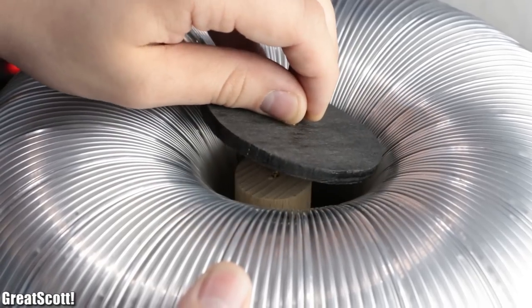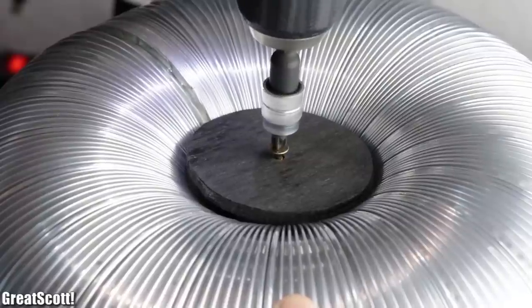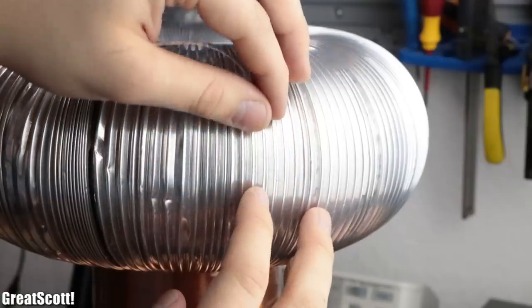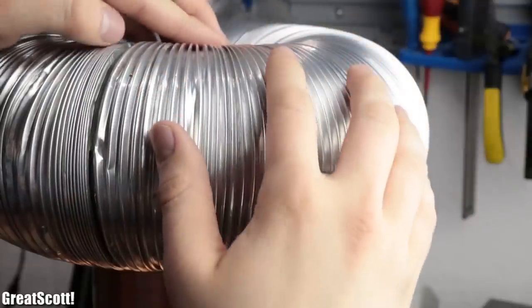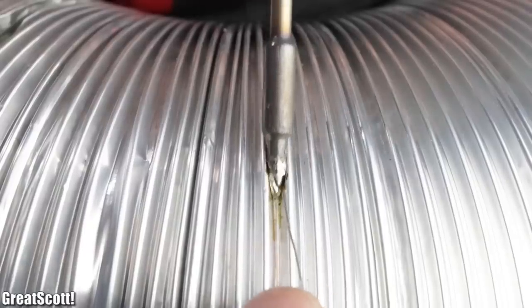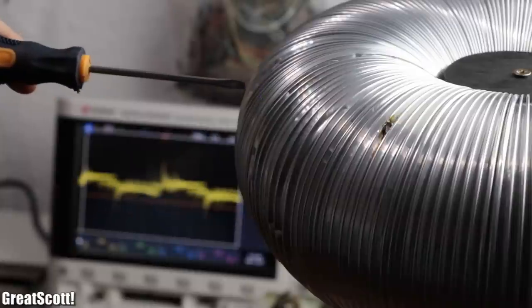...and secure it in place with a circle plywood piece and an additional M4 wood screw. Last but not least, I directed the output wire of the secondary coil to the top load and connected them through a solder connection. And through this design choice...